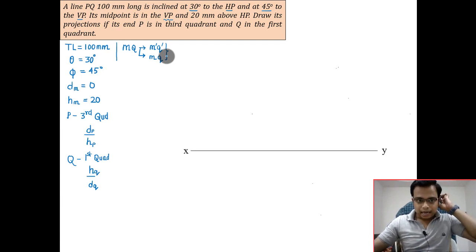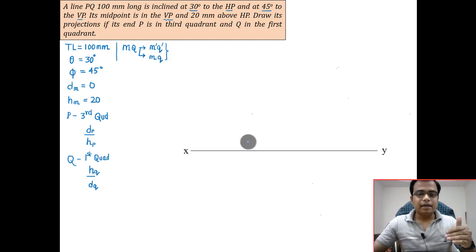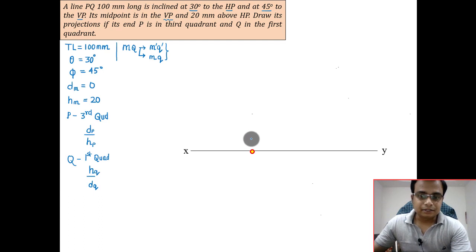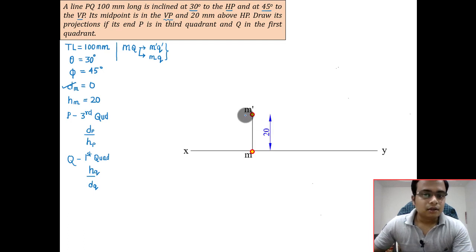Let's go ahead and do this. Here we have an XY line. For a first quadrant, h above and d below. It's the midpoint with which we are kicking off. D is zero, that's along the XY line. H is 20, so 20 millimeters. That's the locus of m in front view.